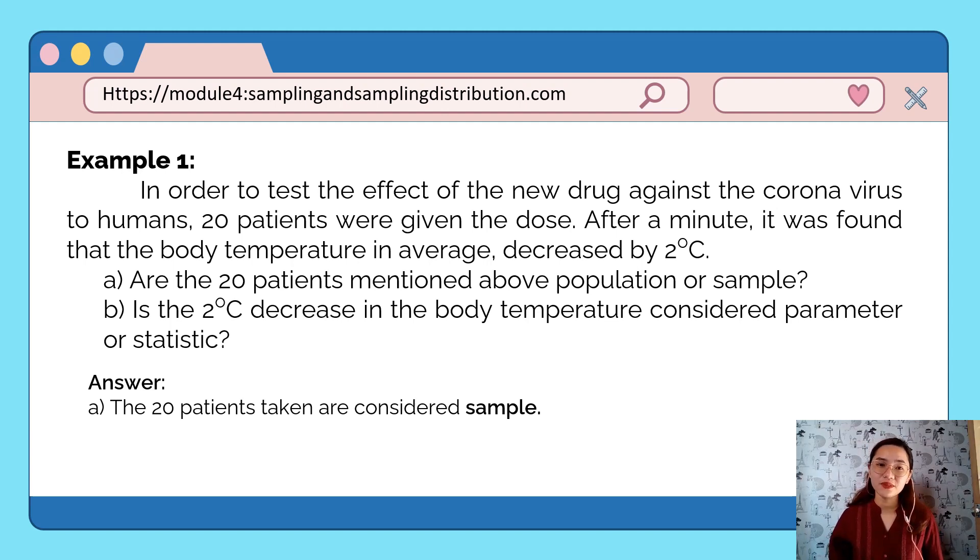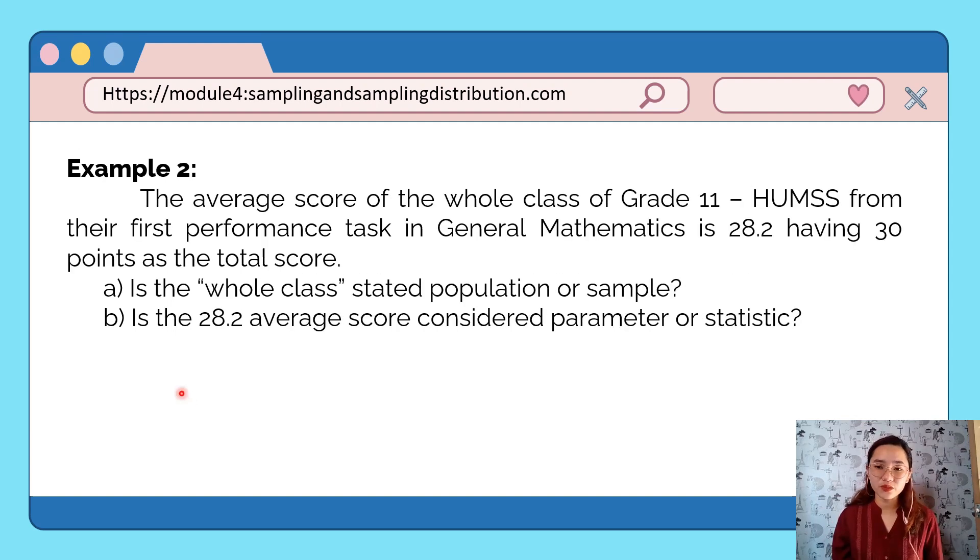Since the 20 patients is a sample, this is a statistic. Example number 2: The average score of the whole class of Grade 11 HUMSS from their performance task in General Mathematics is 28.2, having 30 points as the total score. Is the whole class stated population or sample?